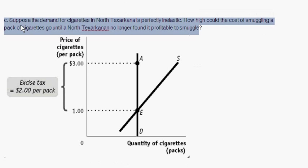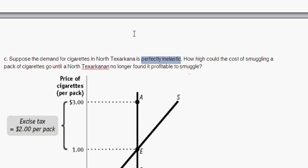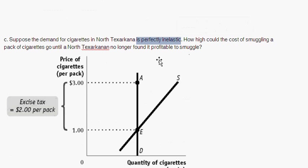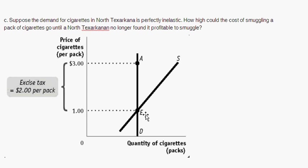Moving on to Part C: suppose the demand for cigarettes in North Texarkana is perfectly inelastic. How high could the cost of smuggling go until North Texarkans no longer find it profitable to smuggle? Recall: an elastic demand curve is closer to flat, meaning a price change yields a relatively large change in quantity demanded. An inelastic demand curve is steeper, giving a smaller change in quantity for the same price change. A perfectly inelastic demand curve means no matter what the price, people demand the exact same quantity.